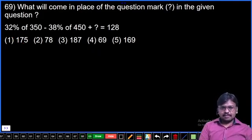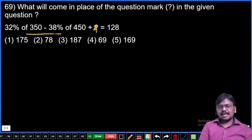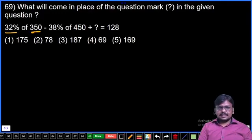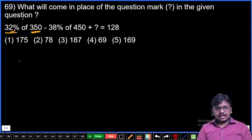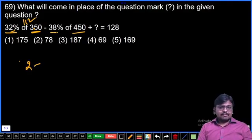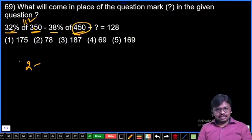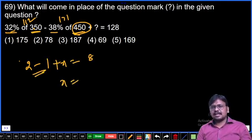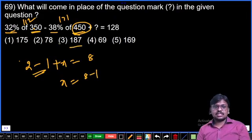Question 69: 32 percent of 350 minus 38 percent of 450 plus x equals 128. Calculate x value. First, 32 percent: 30 percent is 105, 2 percent is 7, total 112. For 38 percent: 40 percent is 180, minus 2 percent (which is 9) gives 171. So unit digit: 2 minus 1 plus x equals 8. Therefore x equals 8 minus 2 plus 1, which gives unit digit 7. Third option: 187.